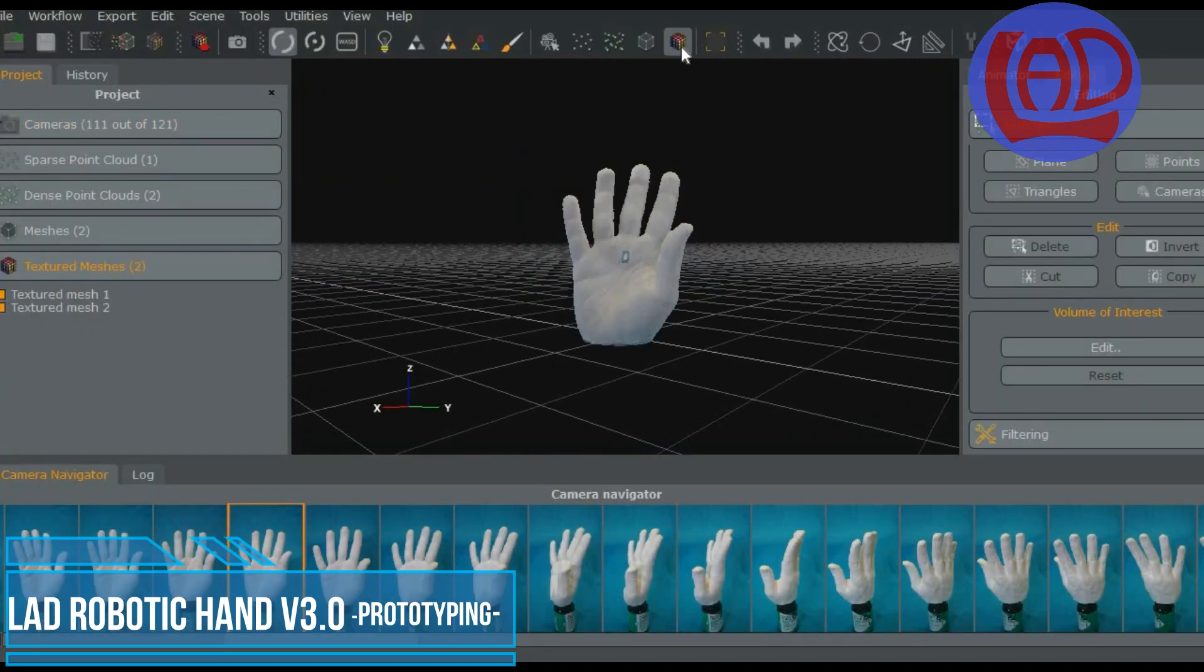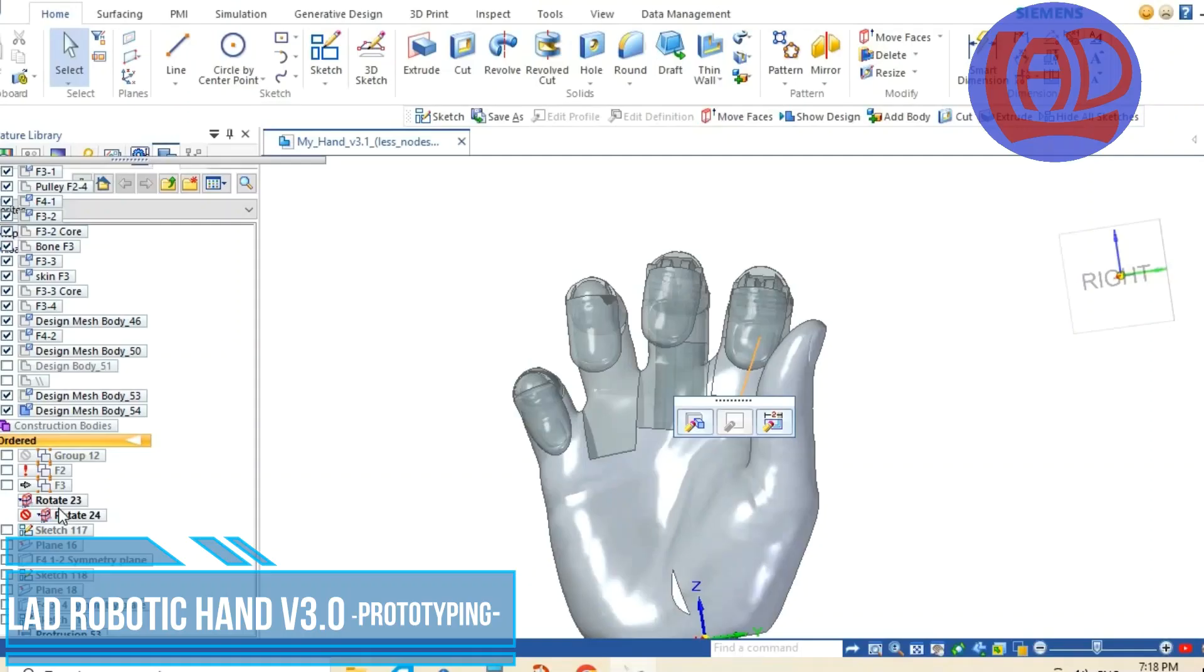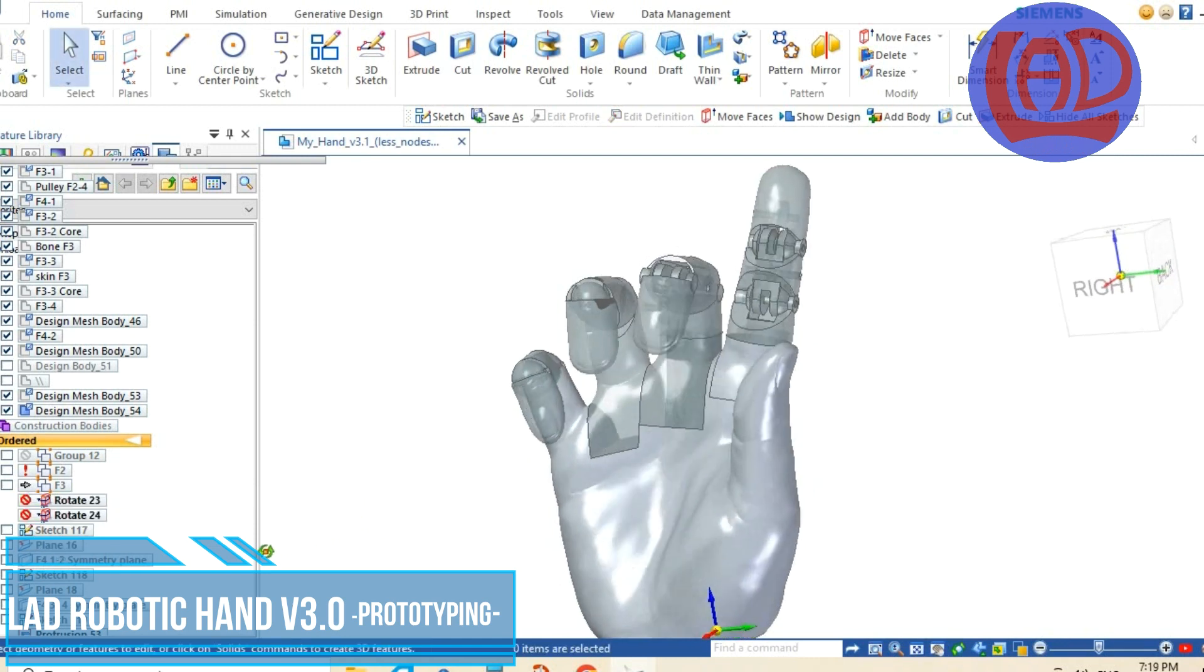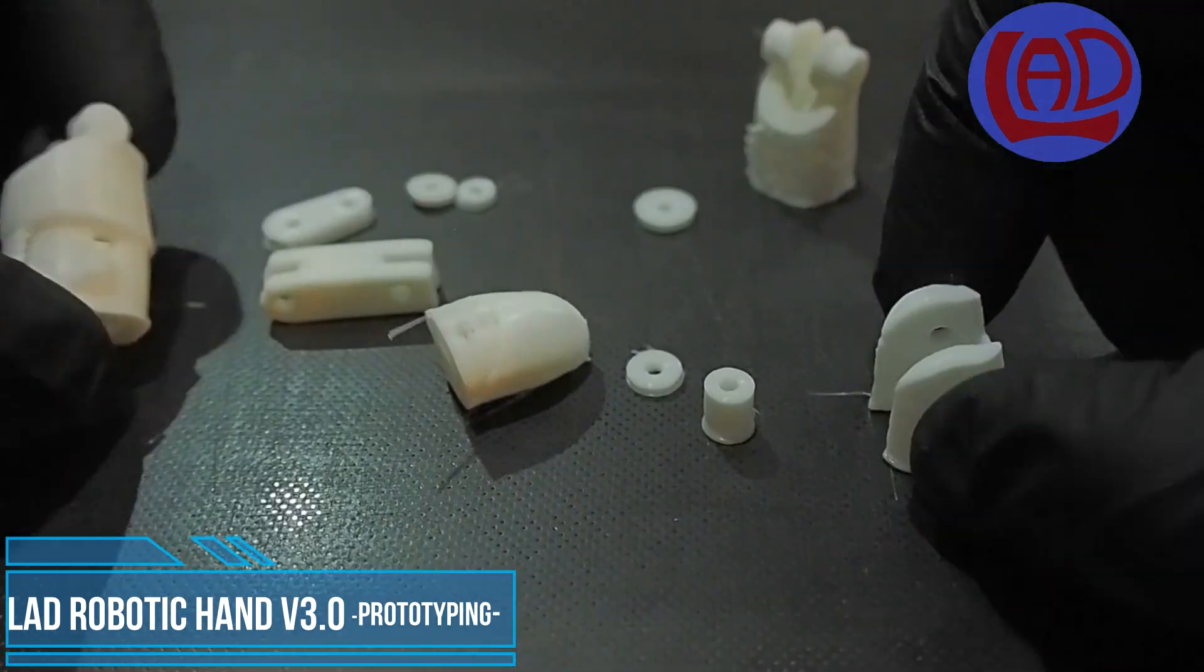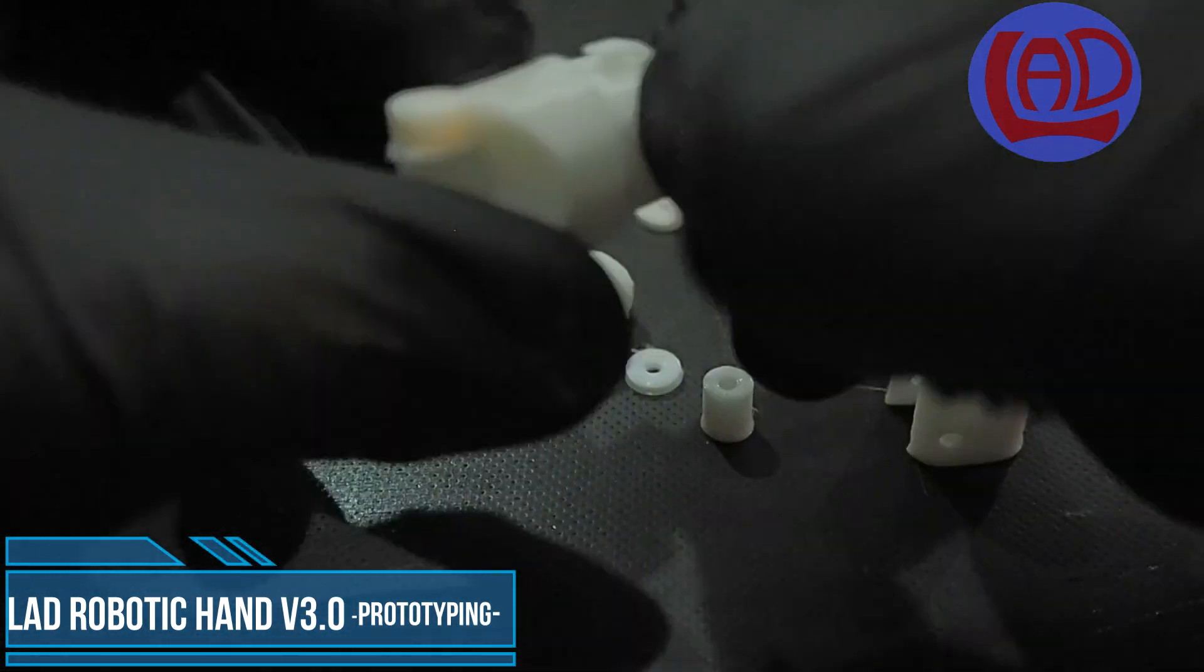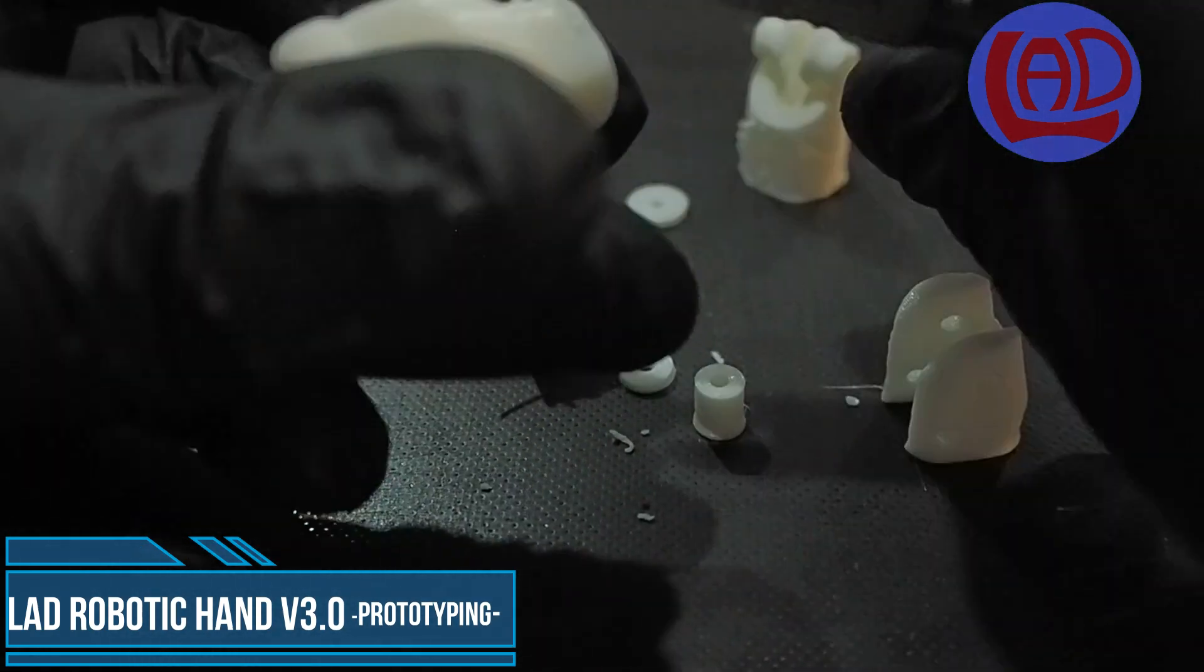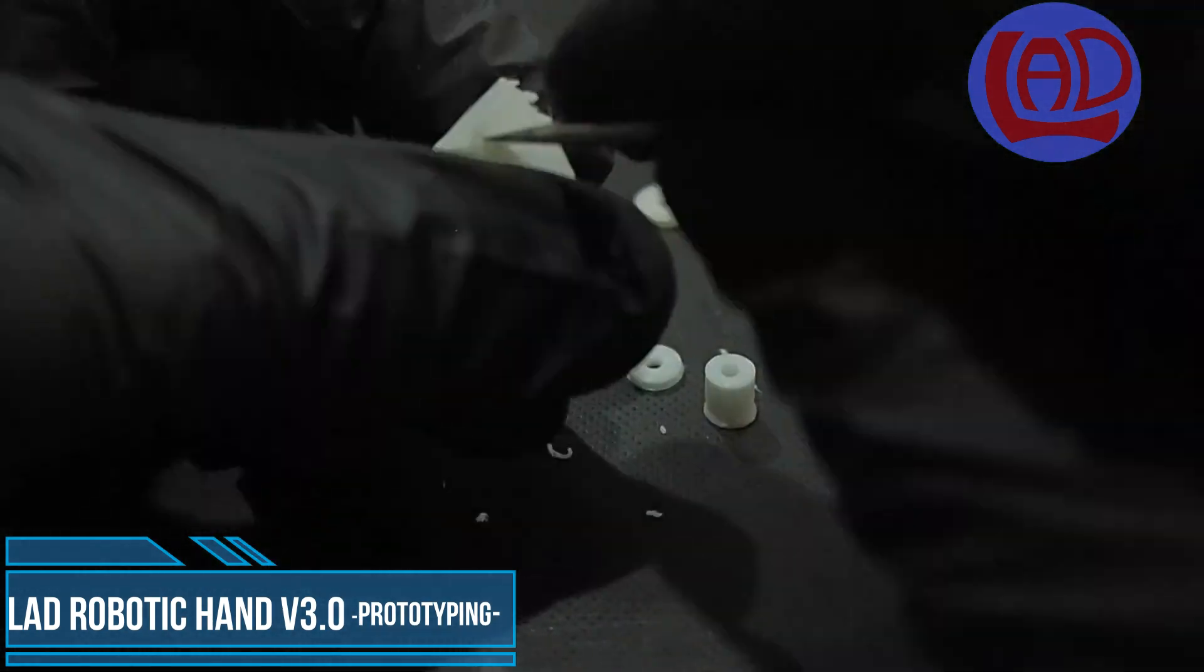In previous videos I 3D scanned my hand using photogrammetry and then I used modeling techniques to turn the rigid model into an articulated mechanism. I will now 3D print a finger prototype to check if the tolerances that I decided to use through the whole design are suitable and also to see if the mechanism that I imagined works.